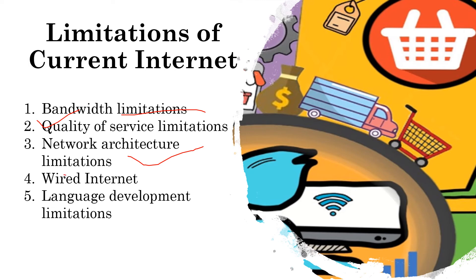Wired internet: copper and fiber optic cables are expensive, and the internet is primarily based on physical cables, which limits user mobility. Language development limitations: the nature of HTML restricts the quality of rich information that can be shared online; future languages would enable improved display and viewing of videos and graphics.